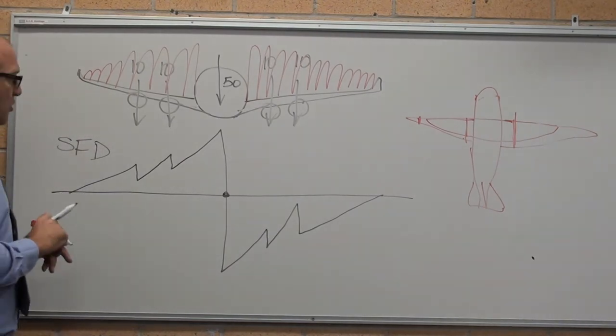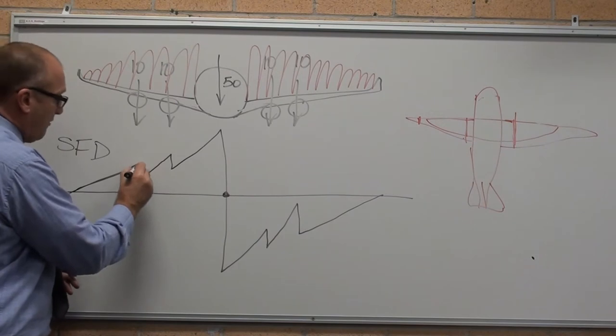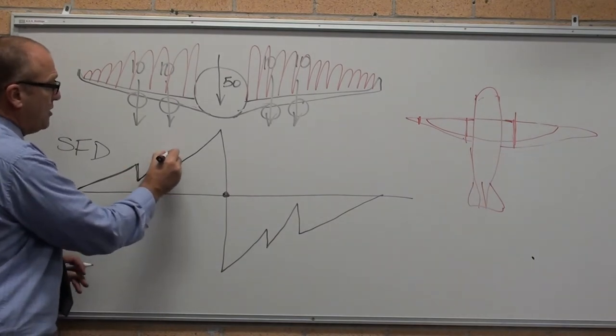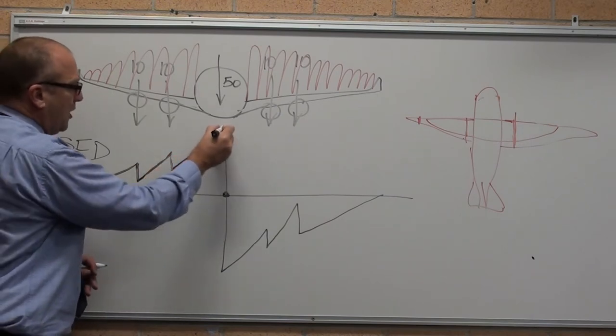So, the shear force diagram, as you know, shear force diagram of a uniformly distributed load is a diagonal line. When we hit the point load, it follows the point load as well.